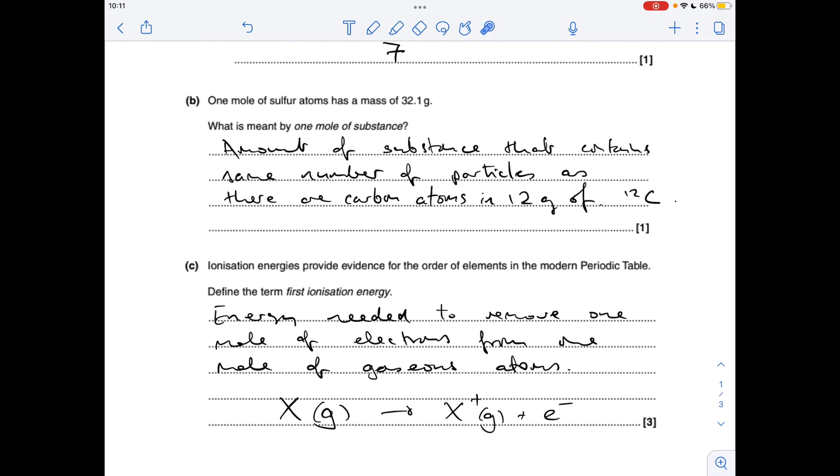Part C, the definition for the first ionisation energy term. So that's the energy needed to remove a mole of electrons from a mole of gaseous atoms. You can always back that up with the equation.